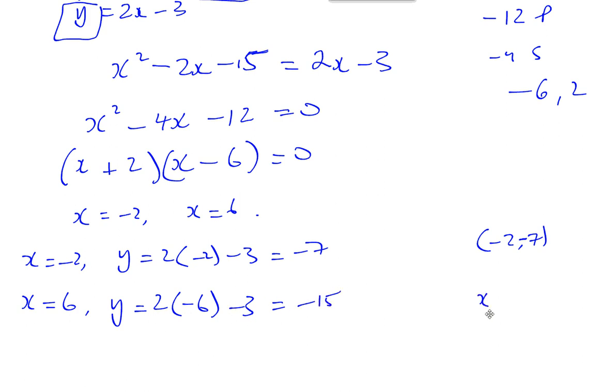So, when x equals 6, y is equal to negative... Sorry, that's a mistake. It's a positive 6. So, that's going to be 2 times 6 is 12 minus 3, which is 9. So, we got the value of x and y.